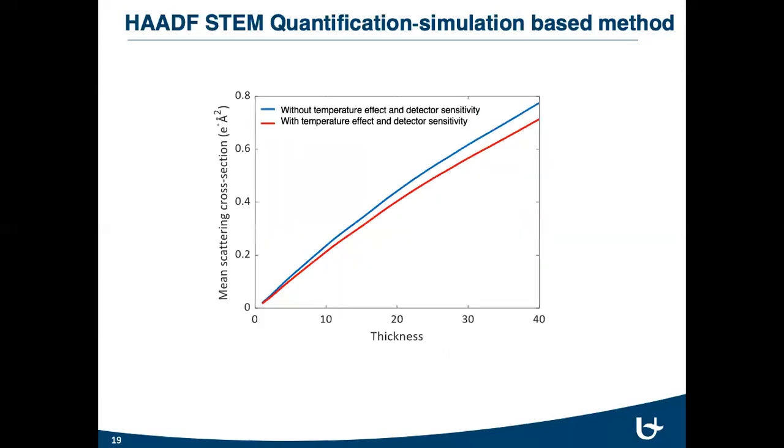Here, you can see the detector sensitivity and temperature effect on the simulated reference scattering cross-section values. For example, without considering the non-homogeneous detector surface and temperature effect, the specified scattering cross-section would correspond to around 18 components. On the other hand, it corresponds to 20 component numbers now, which means that considering the temperature effect and detector sensitivity decreases the atom counting error by around 2 atoms per atomic column.